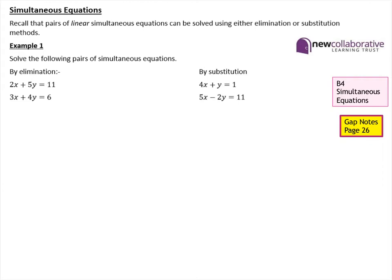First, the elimination method. We're going to use this pair of simultaneous equations here. The method is that we multiply one or both equations by values in order to make the coefficients of either the x terms or the y terms equal. For this pair, I'm going to multiply the first equation by 3 and the second equation by 2.